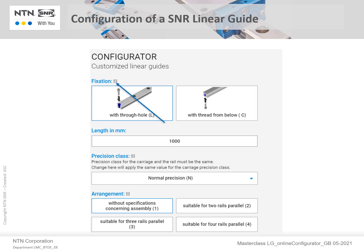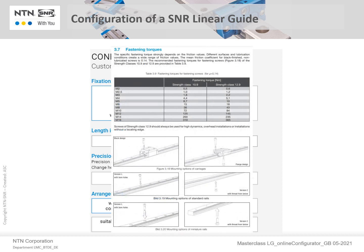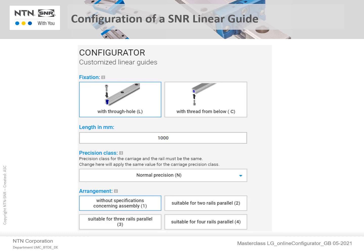Here's a good tip: to obtain further information on any selected option, click on the eye icon shown in the upper left-hand corner. This handy feature will provide a direct link to the product catalog. Then the required rail length can be entered. In this example, we change the preset 1000 mm length to 400 mm.